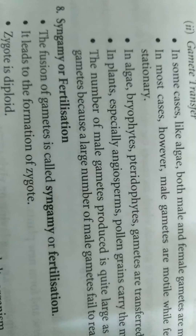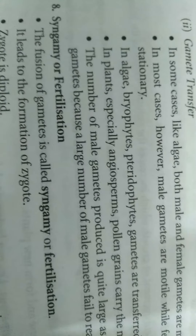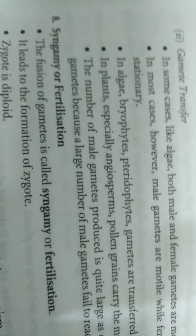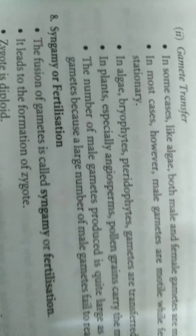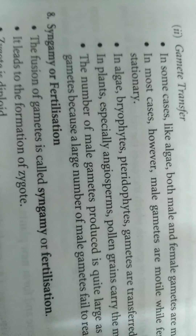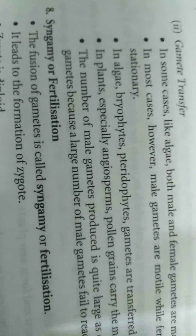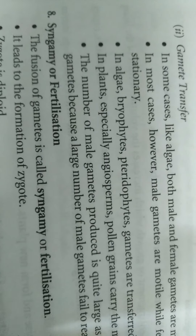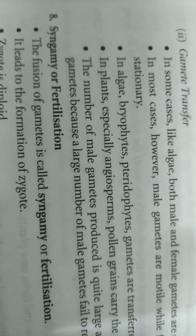In self-fertilizing plants like pea, gamete transfer is very easy. But in cross-fertilizing plants, gamete transfer occurs by pollination.